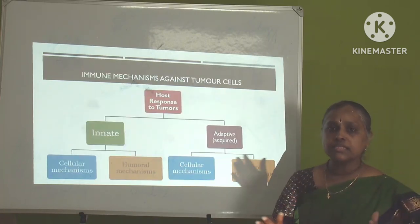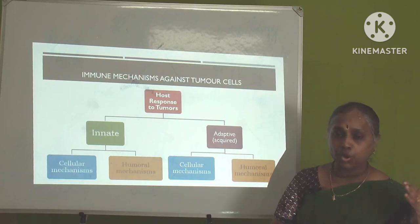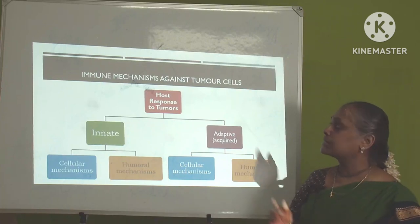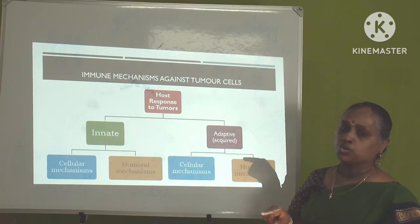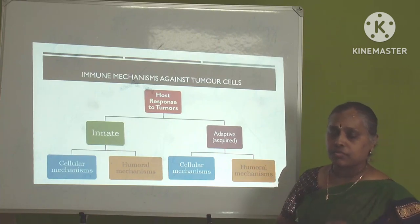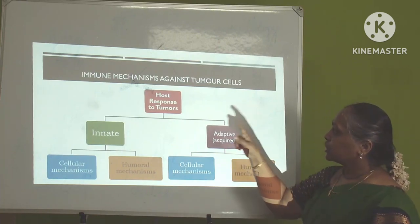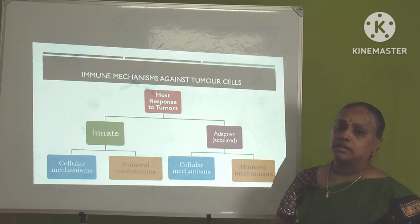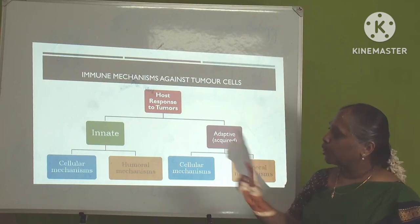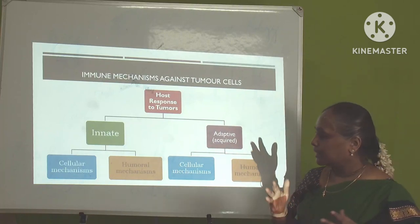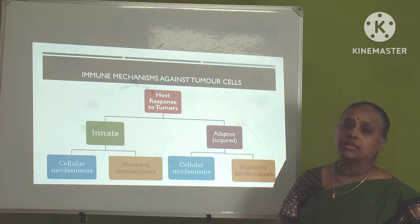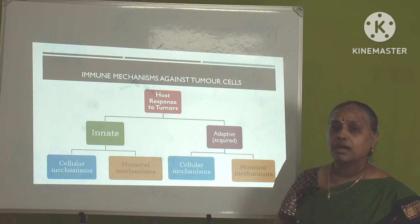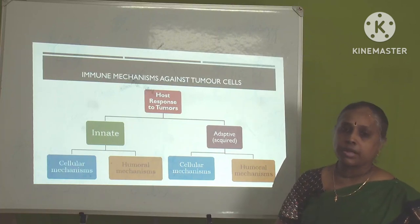These are the different stages of cancer development from an immunological perspective. The next part of this topic — immune response to tumors — will cover the immune mechanisms against tumors. The host response can be divided into innate and acquired or adaptive immune mechanisms, involving both the cellular and humoral arms of the immune system. That will be dealt with in the next part of the video.